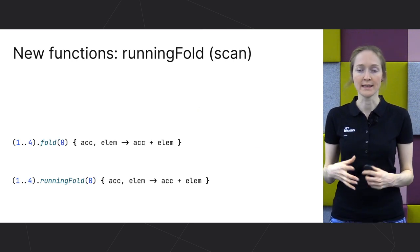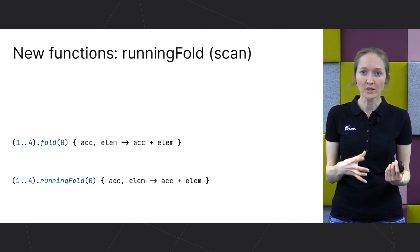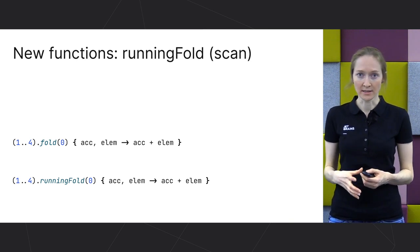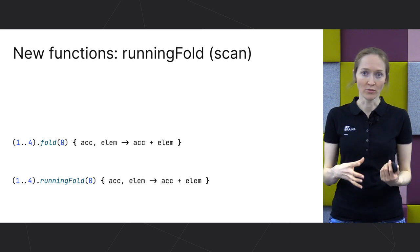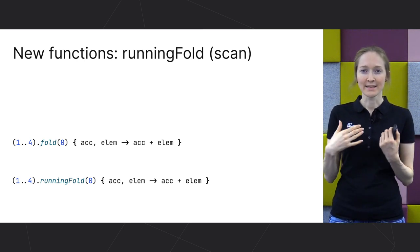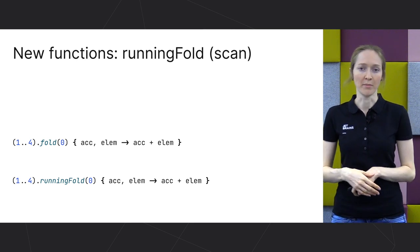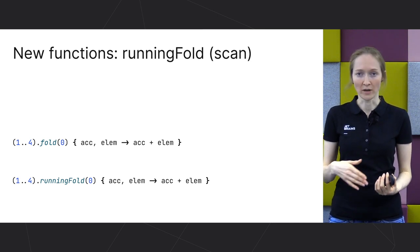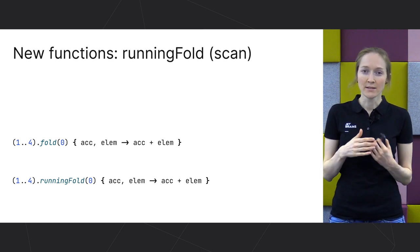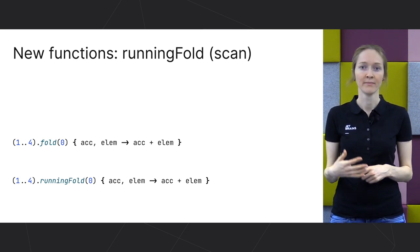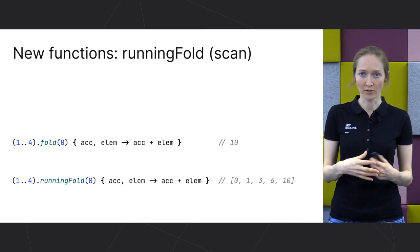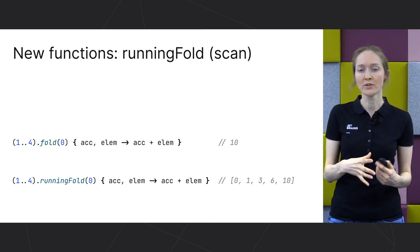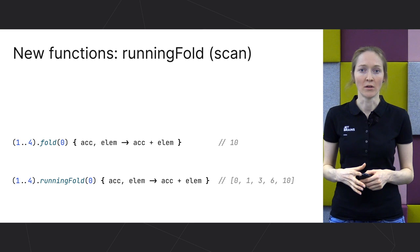A similar function is added for fold functionality. Fold is different from reduce — it takes an initial value, while reduce starts analysis with the first element of the list. runningFold is also available by the name scan. The scan name is used in some languages, so it might be more familiar for some people. Scan is just a synonym — another function in the library that only delegates to runningFold. You can use whatever you prefer. The difference between fold and runningFold is the same as between reduce and runningReduce: runningFold returns all the intermediate results, while fold returns only the end result.